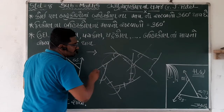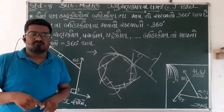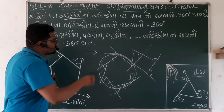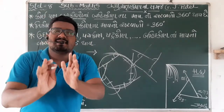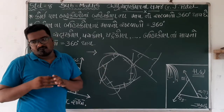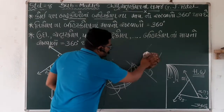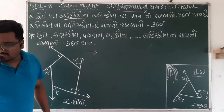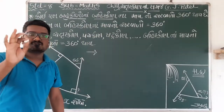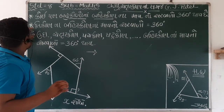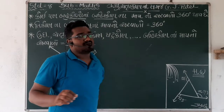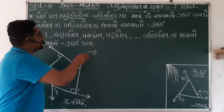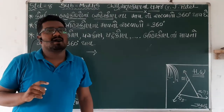તો આપણે બહારની તરફ ગમે તેટલા ખૂણા ઓ દોરીશું, તે વર્તુળ નો ભાગ જ રહેવાના - ગોળ આકારે - અને 360 થી ઓછા ક્યારેય નહીં થાય. વિદ્યાર્થી મિત્રો, આ દાખલા સ્વ-રૂપે સમજ્યા - પ્રથમ મુદ્દો: માપ નો સરવાળો 300 ને 60 - ત્રિ-કોણ ના અંદર ના ખૂણા ઓ ની વાત નથી. ક્યા ખૂણાઓ ની વાત છે - ત્રિ-કોણ ના 3 ખૂણાઓ ના માપ નો સરવાળો 180 થાય.